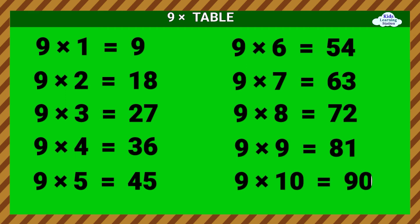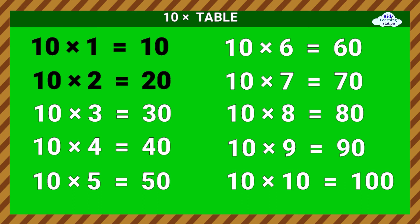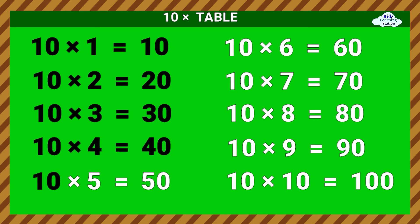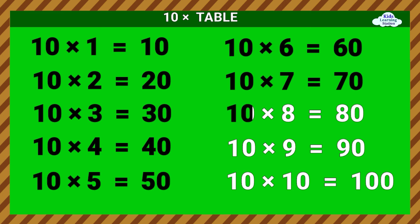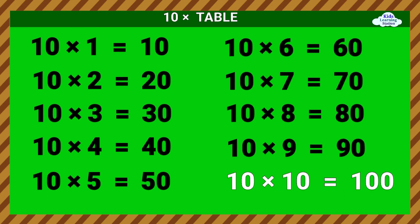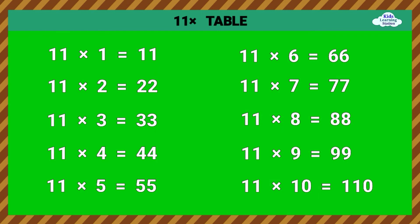Ten times table. 10 times 1 equals 10. 10 times 2 equals 20. 10 times 3 equals 30. 10 times 4 equals 40. 10 times 5 equals 50. 10 times 6 equals 60. 10 times 7 equals 70. 10 times 8 equals 80. 10 times 9 equals 90. 10 times 10 equals 100.